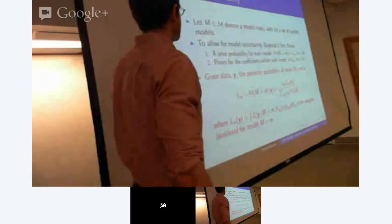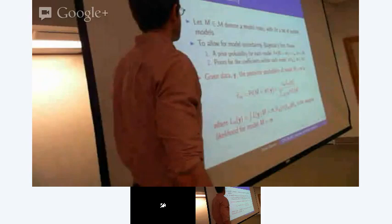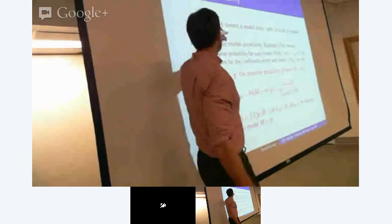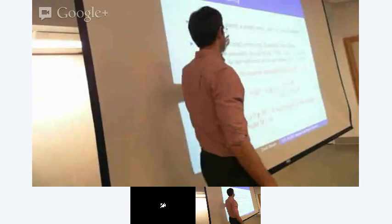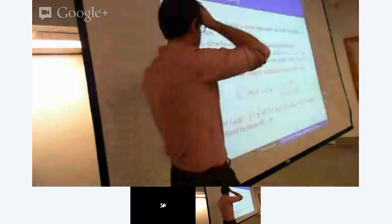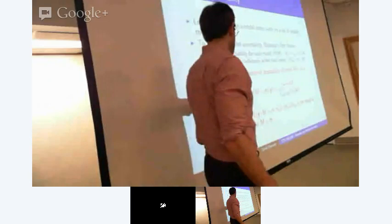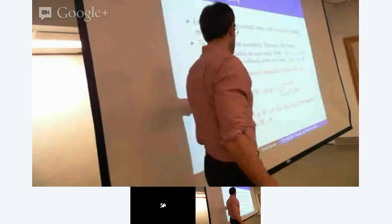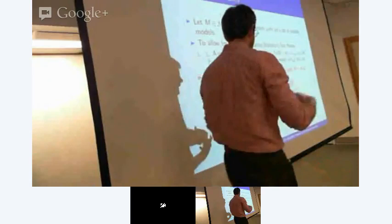Let me remind you of the setting we're in. We have model uncertainty with some model index M as our unknown model, and a list of models script M — a bunch of different possible models. In the regression case it's different possible subsets, but it's much broader. In a Bayesian approach, we choose a prior probability for each model and a prior for the coefficients within each model. Based on those two pieces, we get posterior model probabilities — the probability of model m given the data by marginalizing everything else.